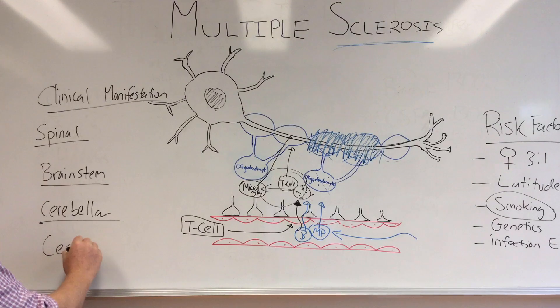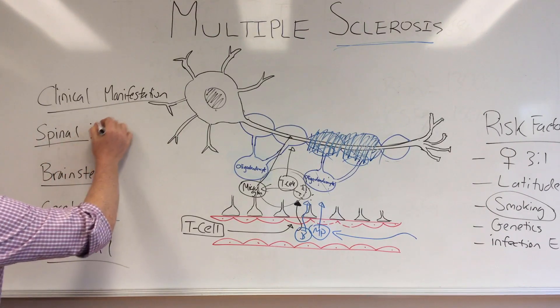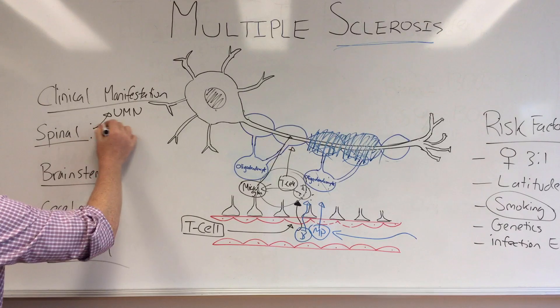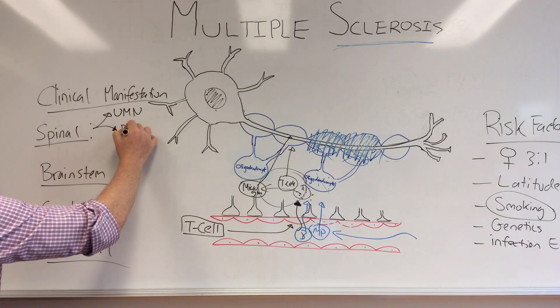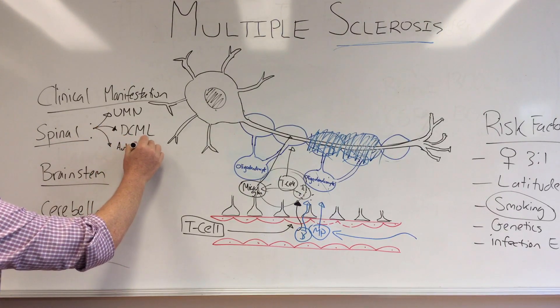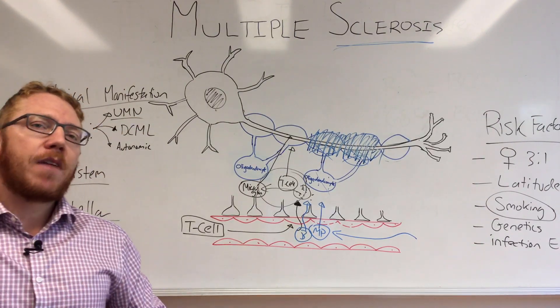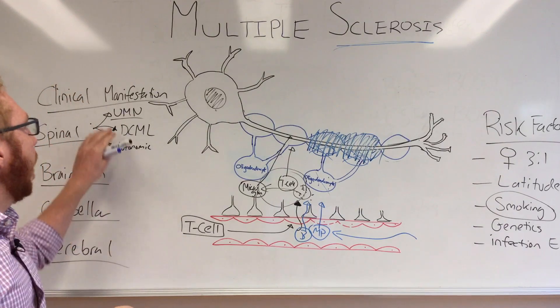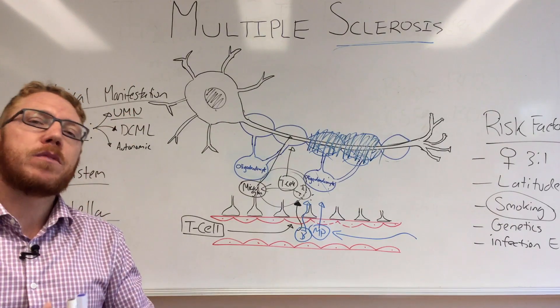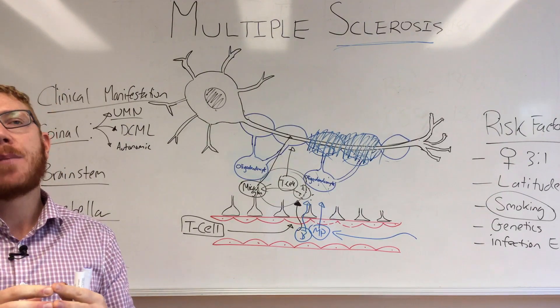Basically all the symptoms that manifest in MS sit within these. The spinal one is the most common and the areas that are affected are upper motor neurons, the sensory side of things - the dorsal column medial lemniscus system - and then we have autonomic. With upper motor neurons, this is affecting - remember going back to the motor system - we have an upper and a lower motor neuron. When you affect the upper motor neuron you get certain symptoms like spasticity, hypertonia, so the muscles are all contracted up and very tight.